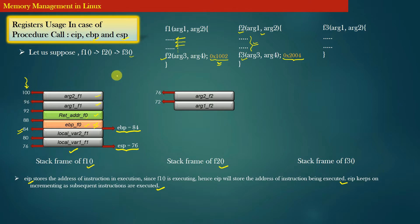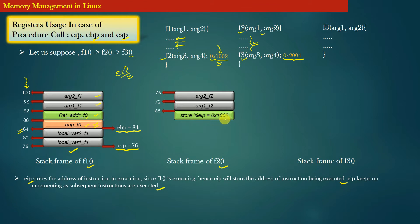When f2 was invoked, what was the value of the EIP register? The value of EIP was 1002, because it was that instruction which caused the invocation of f2. Therefore the current instruction being executed had address 1002, and that value is stored in EIP. So the next step is to store this old value of EIP — 1002 — into the stack frame of f2.